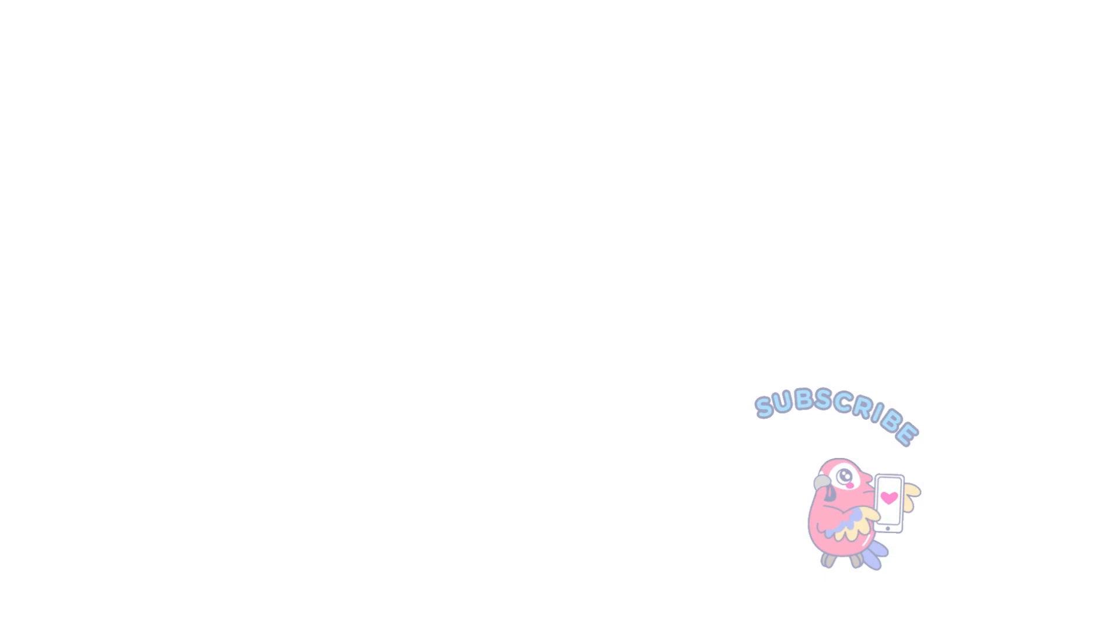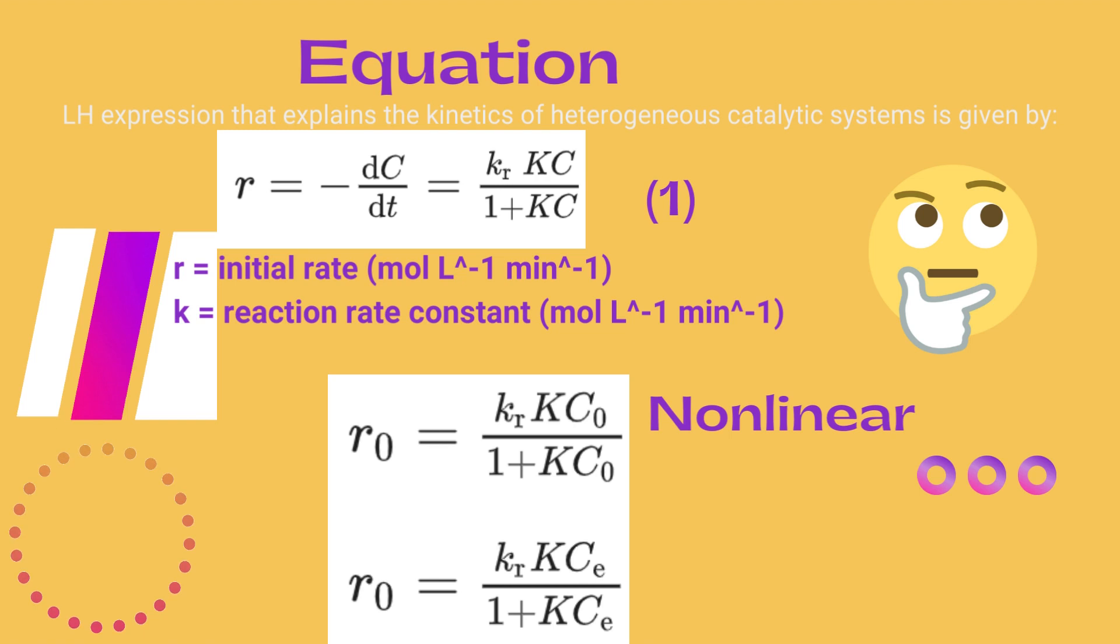The Langmuir-Hinshelwood expression that explains the kinetics of heterogeneous catalytic systems is given by r = kr*K*C/(1 + K*C), where r is the initial rate, k is the rate constant, and Kr is the adsorption coefficient.